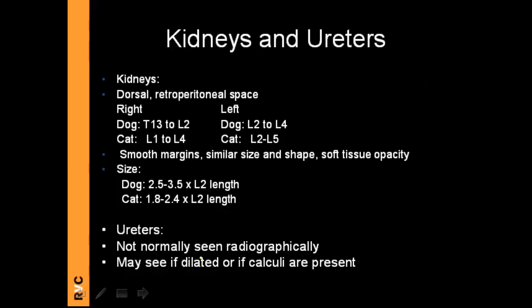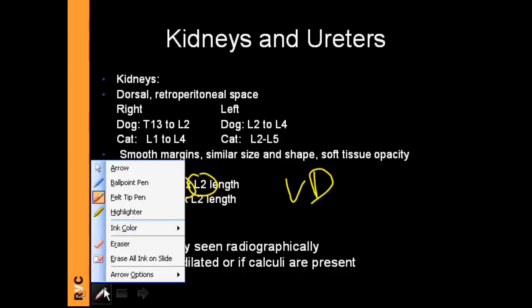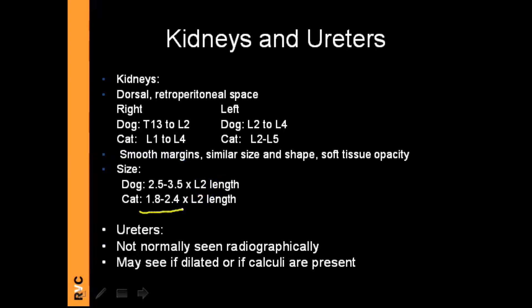Kidneys are not normally seen clearly, and ureters are normally not seen. The right kidney is dorsal and retroperitoneal: in dogs between T13 and L2, in cats between L1 and L4. The left kidney is at L2–L4 in dogs and L2–L5 in cats. On the ventrodorsal view, kidney length is measured relative to L2: 2.5–3.5 times L2 in dogs, and 1.8–2.4 times L2 in cats. This measurement must only be done on the ventrodorsal view. Ureters are not normally visible but may be seen if dilated or if they contain calculi.